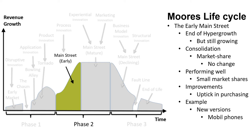Stage 5: The Early Main Street. The era of hypergrowth has subsided, but the category is still growing nicely. The first wave of consolidation results in a market share pecking order that is unlikely to change for a long time. Even companies with small market shares are typically performing well. Customers are focused on seeing systematic improvements in the offering and reward each with an uptick in purchasing. New versions of mobile phones are a classic example of this phenomenon.